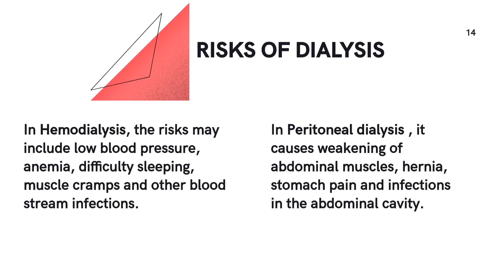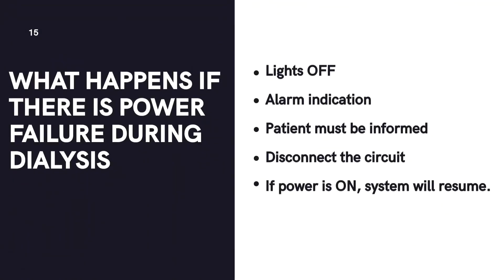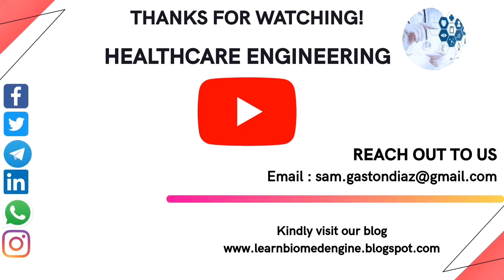What are the risks of performing dialysis? In hemodialysis, risks include low blood pressure, anemia, difficulty sleeping, muscle cramps, and bloodstream infections. In peritoneal dialysis, risks include weakening of abdominal muscles, hernia, stomach pain, and infections in the abdominal cavity. During a power failure, the dialysis machine stops working, lights turn off, and an alarm indicates the failure. The blood pump is operated by hand to either return blood immediately or keep it in circulation. Once blood is returned, the circuit is disconnected and the patient is asked to return another day. If power is restored quickly, the filtration process can resume.